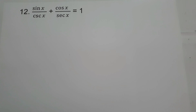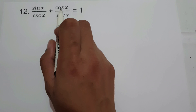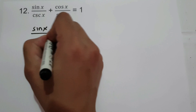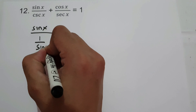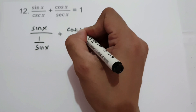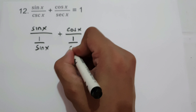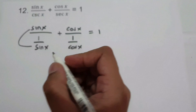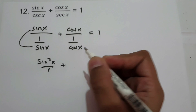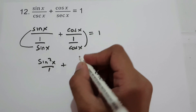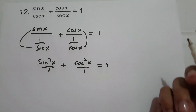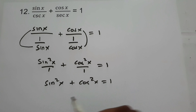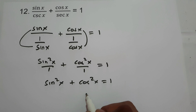On number 12, we are going to prove sine x over cosecant x plus cosine x over secant x equals 1. So to prove this one, let us write sine x and let us have cosecant x as 1 over sine x, plus let us write cosine x over secant x, that is 1 over cosine x, equals 1. And then to simplify, sine x times sine x is sine squared x over 1, plus cosine x times cosine x is cosine squared x over 1, equals 1. Then let us have sine squared x plus cosine squared x equals 1. We all know that sine squared x plus cosine squared x is equal to 1. Therefore, sine x over cosecant x plus cosine x over secant x is equal to 1.